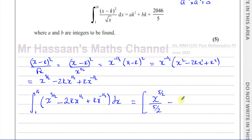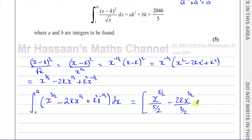For the second term, half plus one is three over two, so we get 2k times x to the three over two divided by three over two. Remember k is just a constant - we don't integrate with respect to k or add to its power. For the third term, k squared times x to the negative half: adding one gives positive half, so we get k squared times x to the half divided by one half. Note: that should say k squared throughout - apologies for the earlier omission.